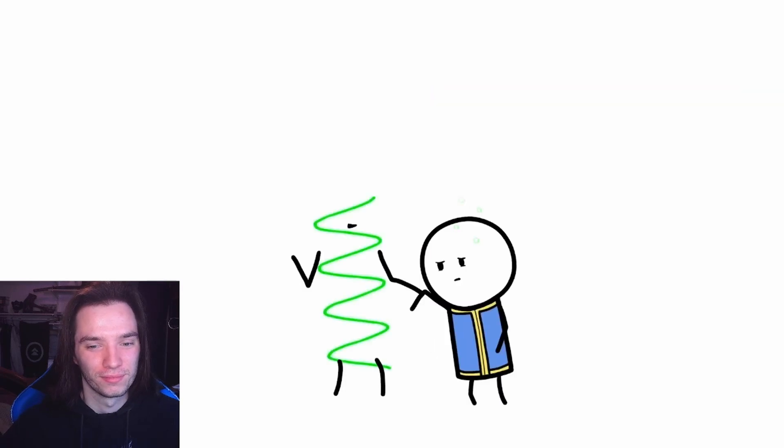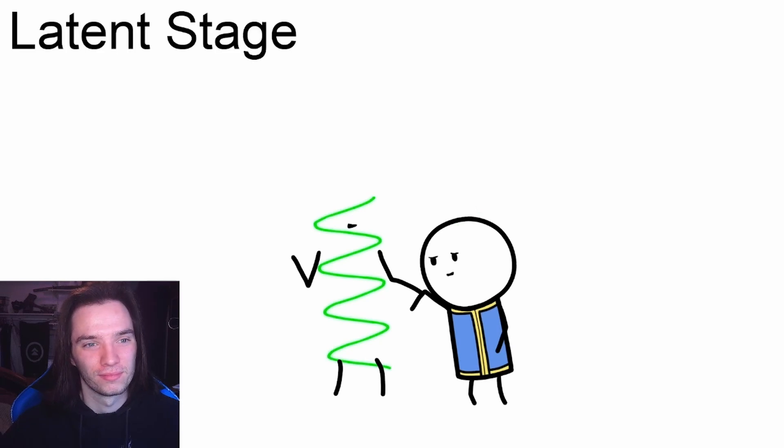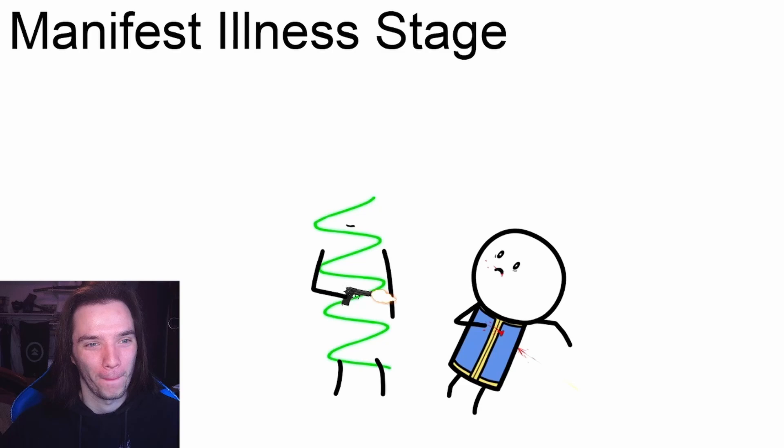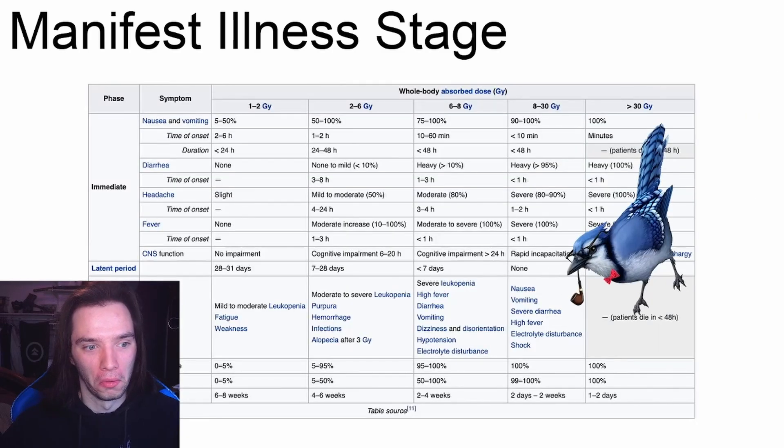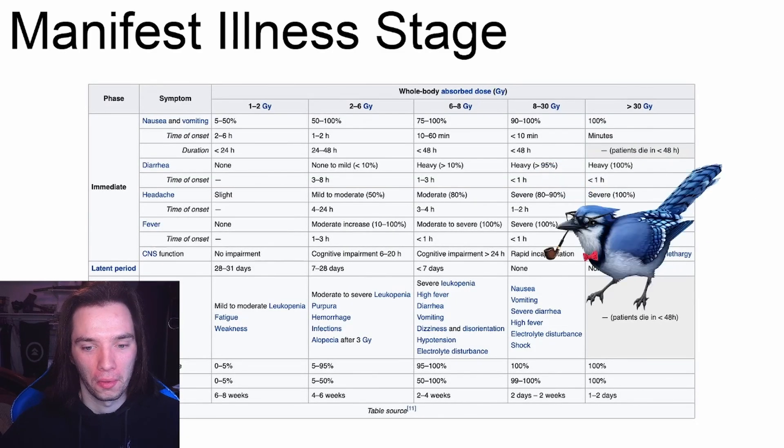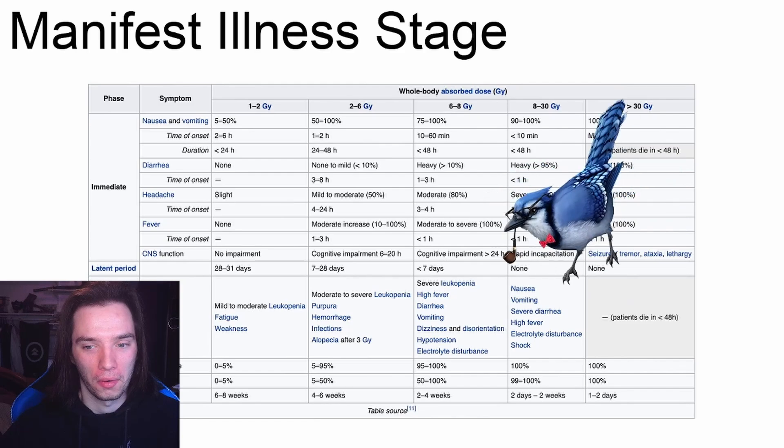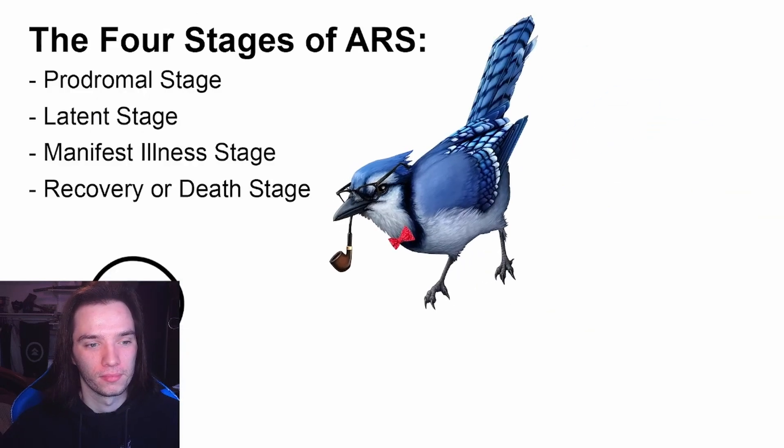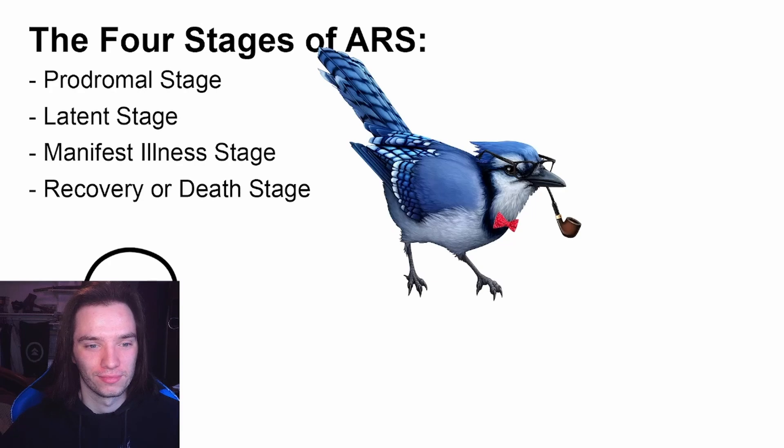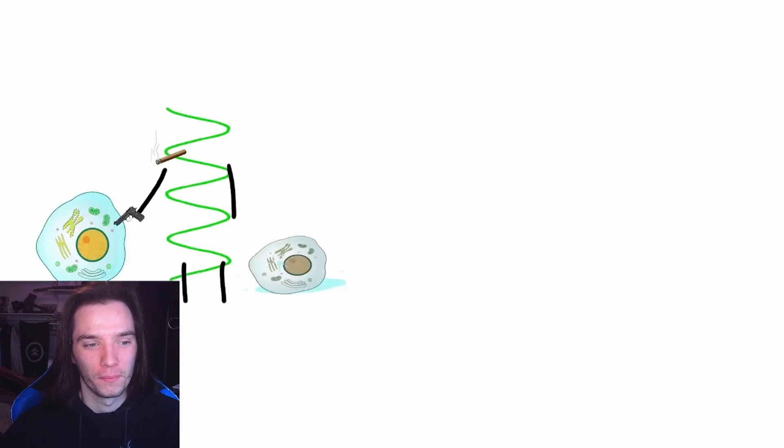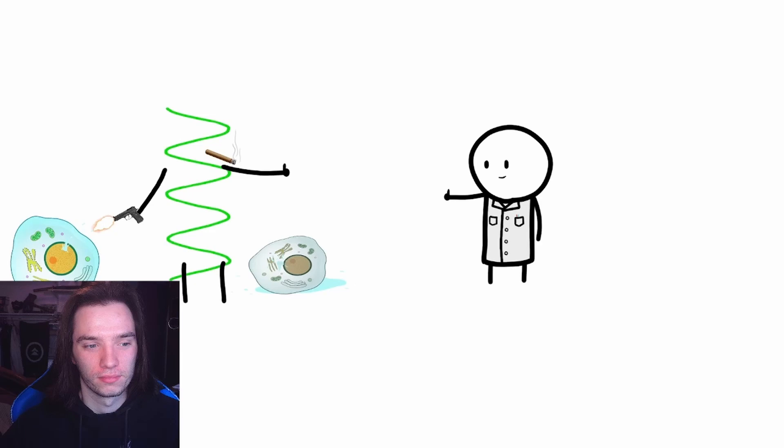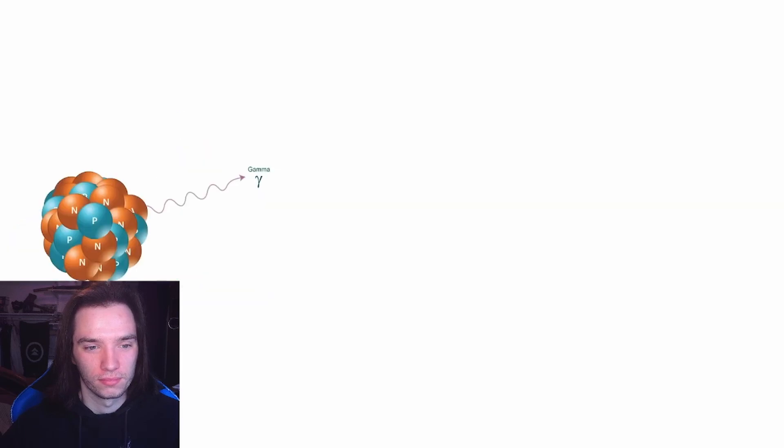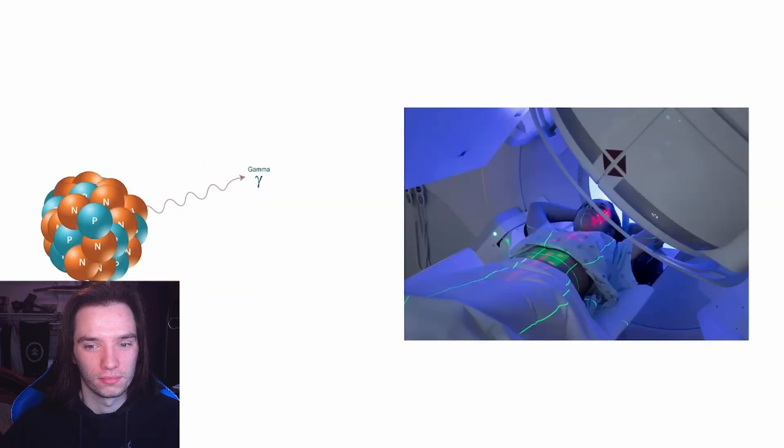But our little gamma ray here is quite the gaslighting girl boss, so next it attempts to draw you in with a false sense of security in the latent phase, where you start to feel overall improvement and think you actually aren't sick at all. However, just as you begin to feel that rare sensation called happiness, you're then hit with a manifest illness stage, and there's a whole ass table for those symptoms. So just like throw a dart or something. No matter what, you're not having a fun time. And finally, we have the recovery or death phase. Guess what happens there?